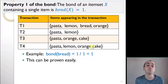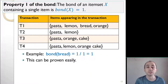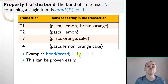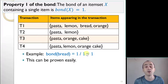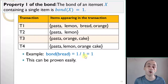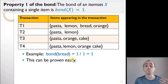The bond measure has some interesting properties. The first property is that the bond of an item set X containing a single item is always equal to 1. For example, the bond of bread is 1 divided by 1, and the bond of pasta is 4 divided by 4 — always 1. This can be proven easily. Another important property is the a priori property of the bond — also called anti-monotonicity. If X is a subset of Y, then the bond of Y will be less than or equal to the bond of X.